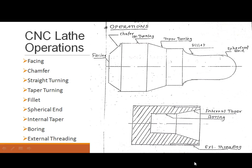Let's look at the different lathe operations. We have facing, which reduces the length of the workpiece, then chamfer, straight turning, taper turning, fillet, and a spherical end — those are the exterior cut operations. Some interior operations include internal taper, boring, and external threading.